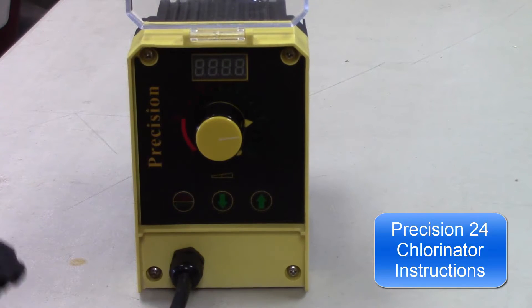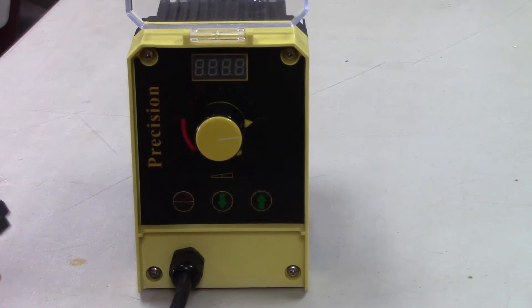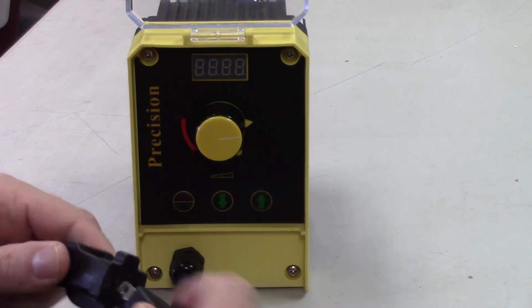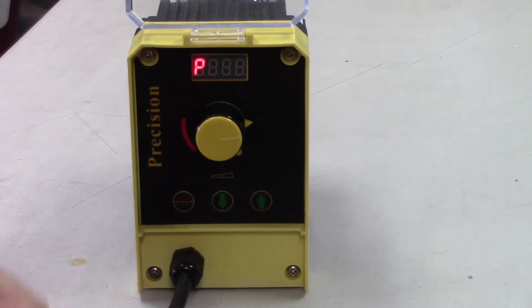Howdy folks, got another Clean Water Store instructional video. Real short, sweet one. This is for a non-pulse precision 24 metering pump, usually used for chlorine or hydrogen peroxide. When you plug the pump in, it's going to light the letter P. The letter P is letting you know it has power. It's saying I'm plugged in, I'm turned on.